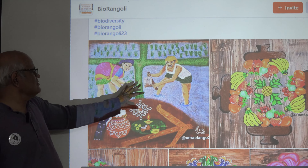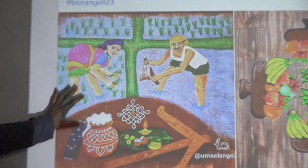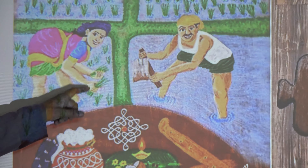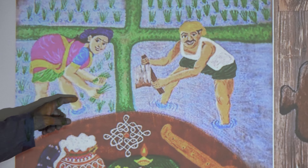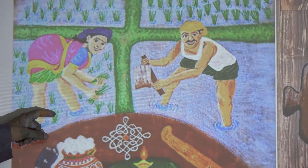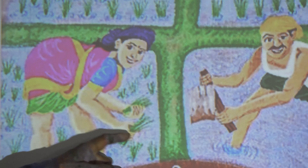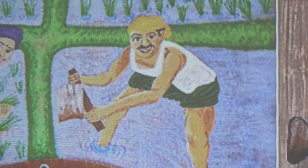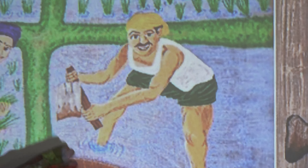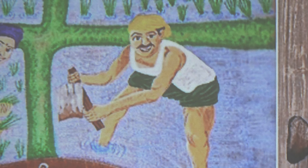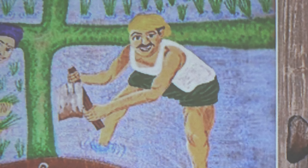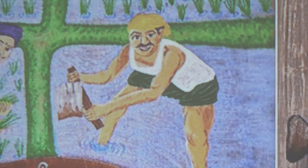Here you can see agricultural activity — the farming couple is doing farm work. She is planting paddy, which in Telugu we call by its natural name, and this man is doing the irrigation, directing the water to a particular part of the field.